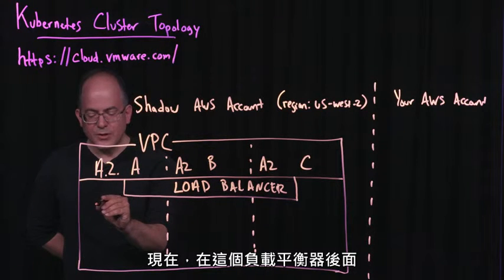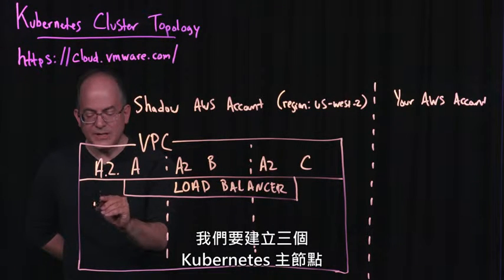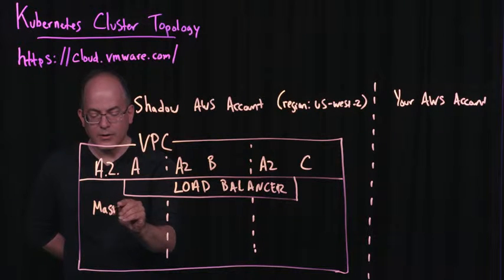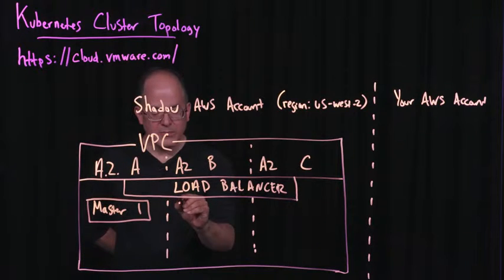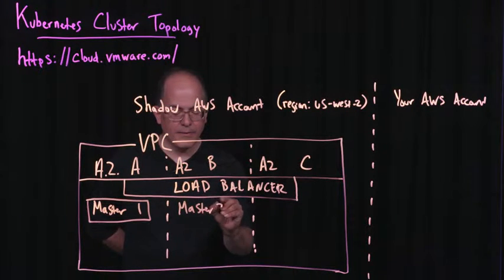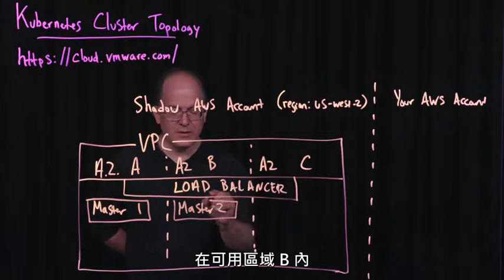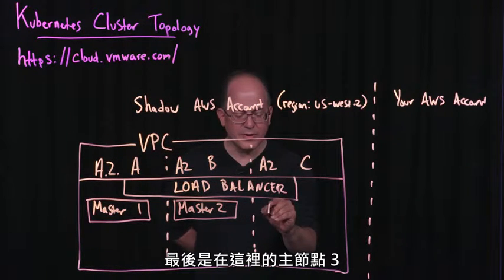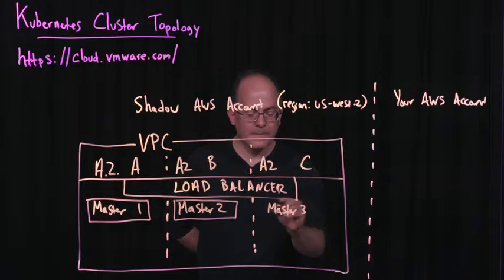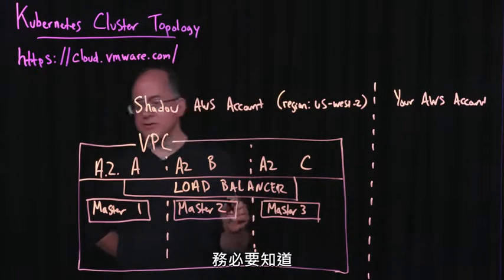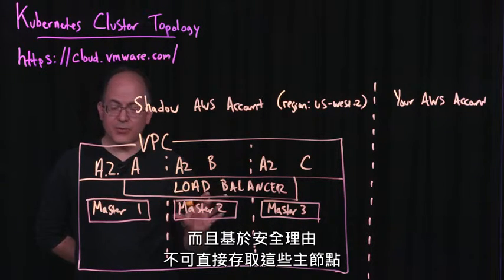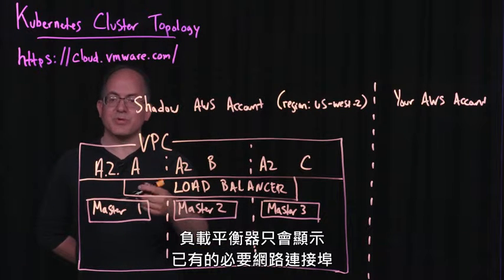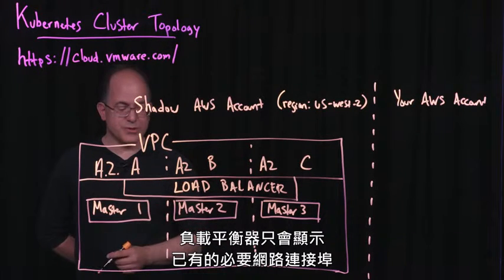Behind this load balancer, we're going to make three Kubernetes masters. I'm going to make master one in availability zone A, master two in availability zone B, and master three in availability zone C. These masters are running on private networks — they are not directly accessible for security reasons. They are only accessible via this load balancer, which will expose only the necessary networking ports.